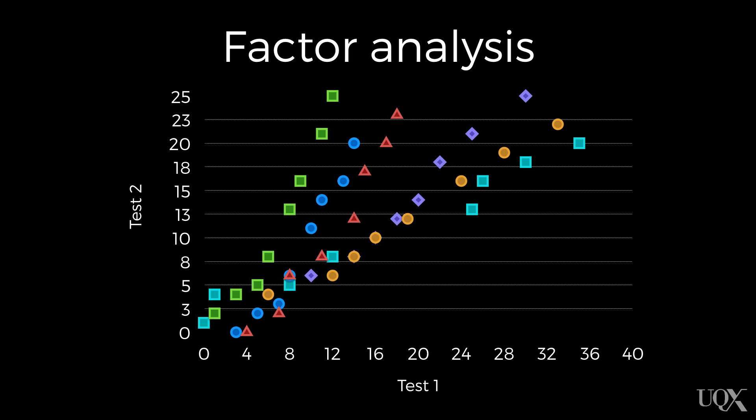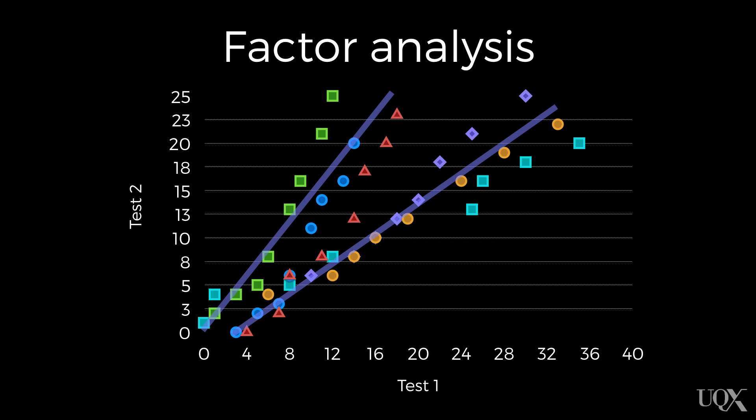With factor analysis we can plot all of the responses and you can see if you need one dimension, two dimensions, or three dimensions, and so on to summarise the data. From the factor analysis researchers have conducted on personality measures, they seem to agree that there are between three and sixteen dimensions of personality that are necessary for describing it.